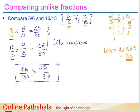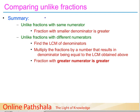Let us summarize all our learnings on comparing unlike fractions. When we have unlike fractions with the same numerator, the fraction with the smaller denominator is greater. When we have unlike fractions with different numerators, we first find the LCM of the denominators, then multiply each fraction by a number so that both denominators equal the LCM — this converts them into like fractions. We then apply the rule for like fractions: the fraction with the greater numerator is greater. That concludes our discussion on comparing unlike fractions.